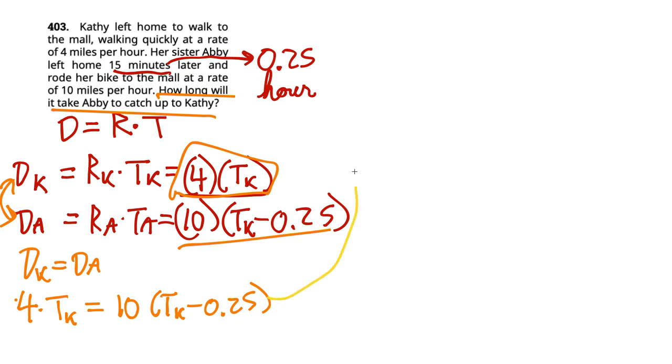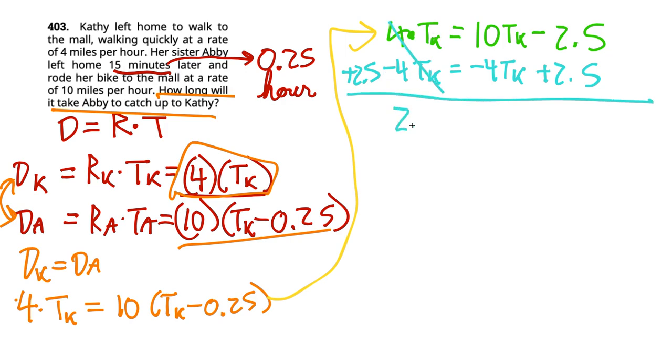So it looks like we have to do some distribution here. So 4 times TK equals 10 TK minus, and 0.25 of 10 is 2.5. Now, the question is, which side has more of the variable T sub K? It looks like the right-hand side. So first thing I want to do is subtract 4 TK from both sides. And you can basically simultaneously add 2.5 to both sides. So basically the left side is going to be the constant side. And then the right-hand side will be the variable side. So we have 6 TK. So we're going to divide by that coefficient of TK. So it's going to be 2.5 divided by 6. And that is gnarly.